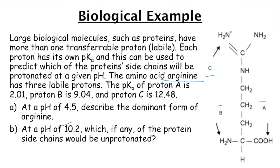Okay. So it looks like a 2.01. And then B has a pKa of 9.04. And then C has a pKa of 12.48. Okay. So at a pH of 4.5, it wants us to describe the dominant form of arginine.